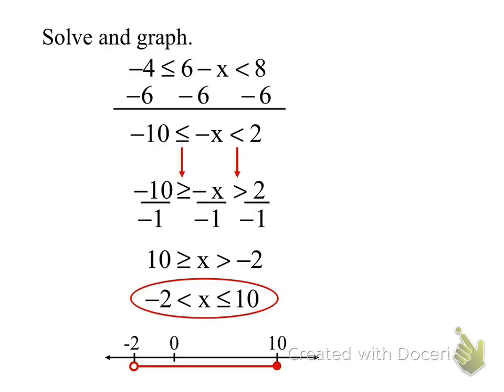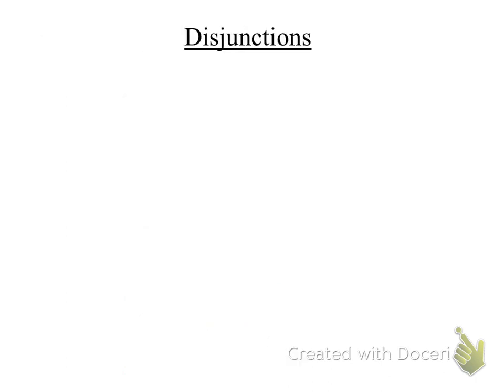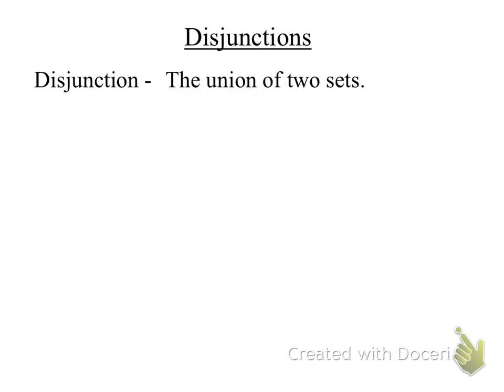Those are called conjunctions — 'con' means together with, so it's where they're both intersecting. Now we're going to talk about disjunctions — like 'disjointed,' broken apart. A conjunction is an intersection, described by the word 'and.' A disjunction is a union, described by the word 'or.' It's a union of both sets. If you're in the science club OR the math club, you're invited — you don't have to be in both clubs.